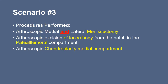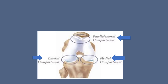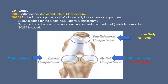In scenario three, a medial and lateral meniscectomy is performed, an excision of the loose body in the patellofemoral compartment, and a chondroplasty in the medial compartment. The meniscectomy is done in the medial and lateral compartments, the loose body is removed in a different compartment — the patellofemoral — and the chondroplasty is done in the same compartment as the medial meniscectomy. CPT code 29880 for the medial and lateral meniscectomy will be reported, and G0289 for the removal of the loose body in the separate patellofemoral compartment.